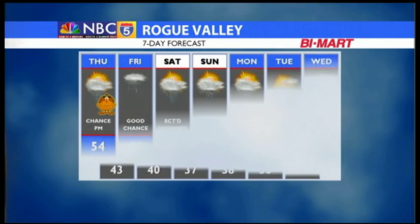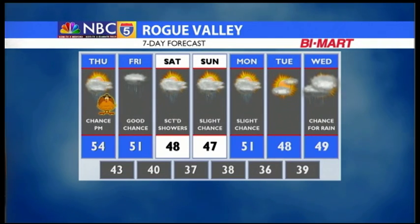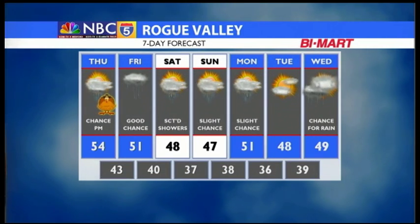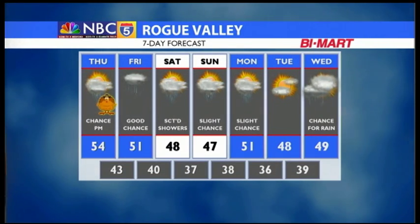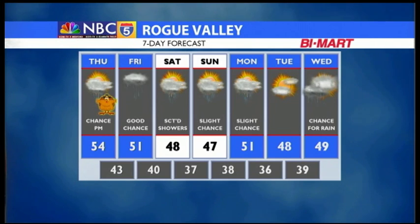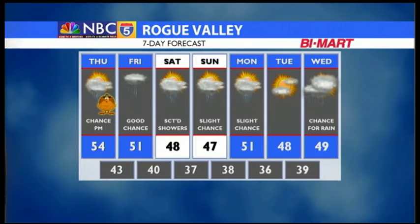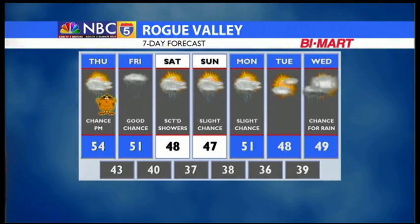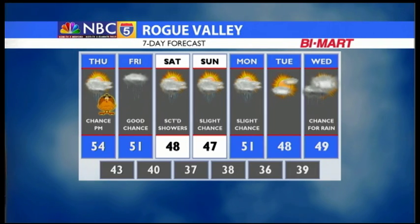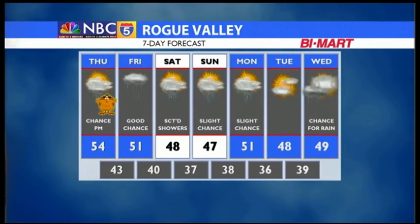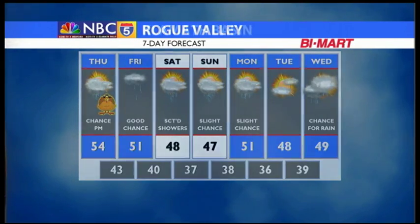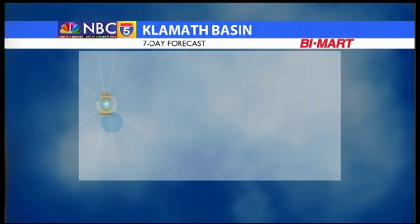Our seven-day forecast stays active for the Rogue Valley. Thursday, there's a chance for some late-day rain. Better chances Thursday night and Friday. Scattered showers on Saturday, a slight chance on Sunday and Monday. Tuesday right now looks okay. Chance for more rain on Wednesday. Highs will be in the 40s and 50s, lows generally in the 30s and 40s.